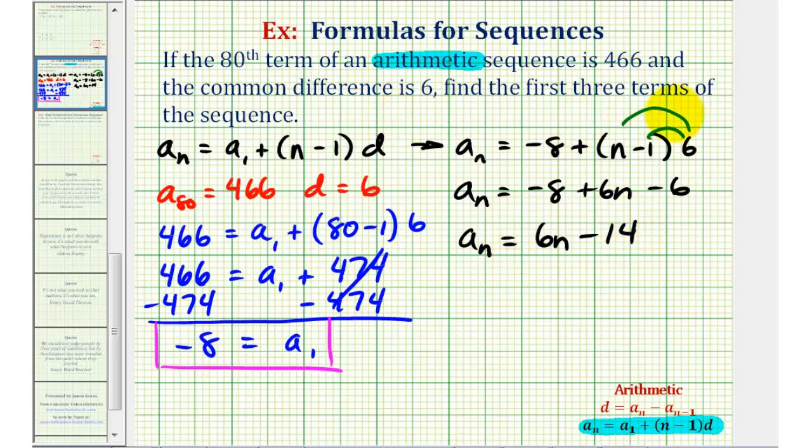Now to find the second and third terms, we'll find a sub two and a sub three. A sub two is equal to six times two minus fourteen, which would be twelve minus fourteen, or negative two. And a sub three is equal to six times three minus fourteen, or eighteen minus fourteen is equal to positive four.